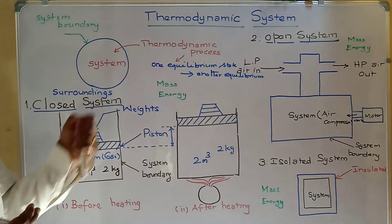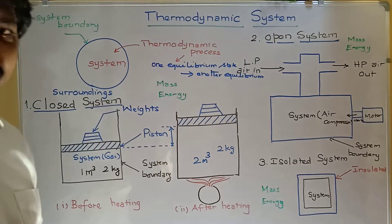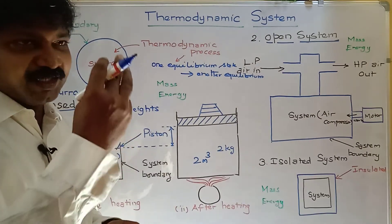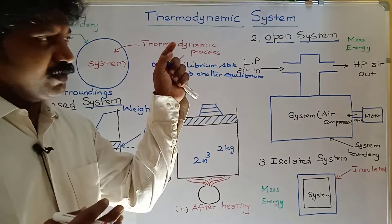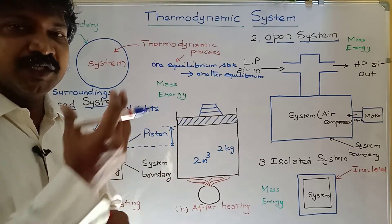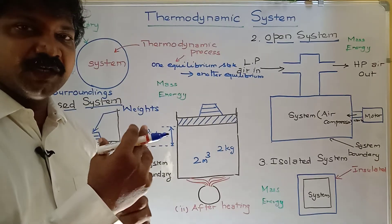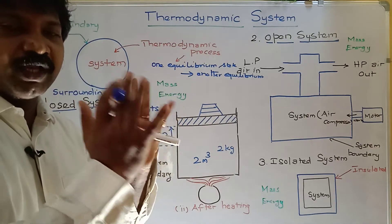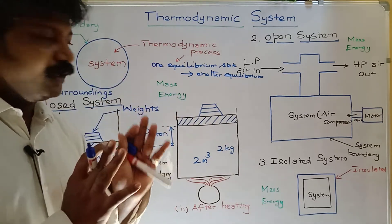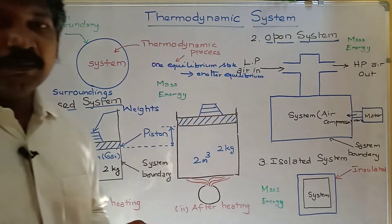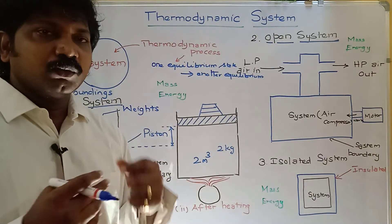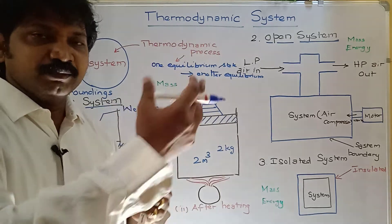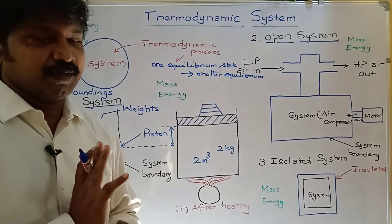Examples of thermodynamic systems: in an internal combustion engine, inside the cylinder, air and fuel mixture enter and combustion takes place. After combustion, burnt gases leave the cylinder. That is one example. Another example is a boiler, where water enters the steam boiler and is converted into steam.